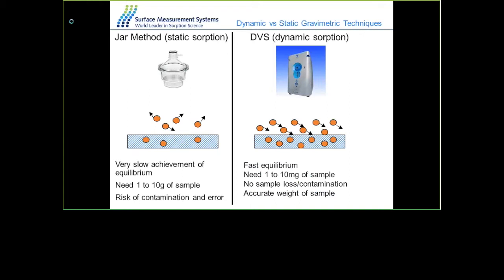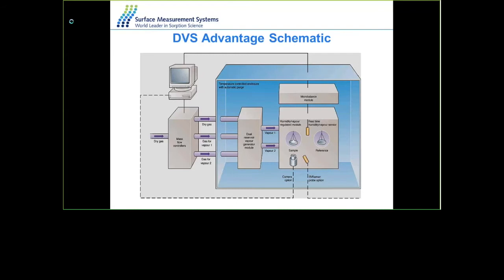Only a small amount of sample in the milligram range — sometimes as small as one milligram — can be used. The sample stays in the sample chamber, so there is no risk of contamination or sample loss. A microbalance with 0.1 microgram accuracy is used to monitor changes in the mass of the sample.